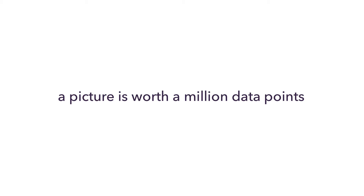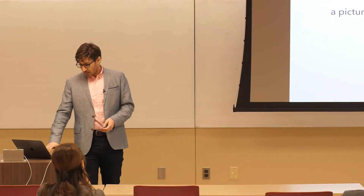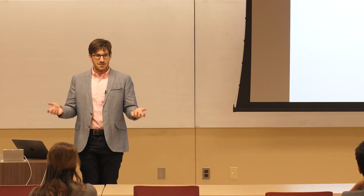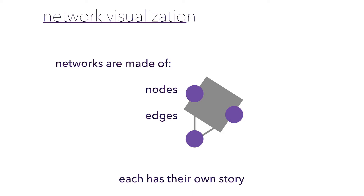A picture is worth a million data points. No matter how big your data or how complicated your model, if you can visualize it effectively, you can describe the story hidden underneath. To break this lecture into manageable components: networks are made of nodes and edges. I'll start by focusing on how we can modify node visualizations to tell stories about players, then address how to effectively visualize tons of edges and mitigate the overcrowding problem.